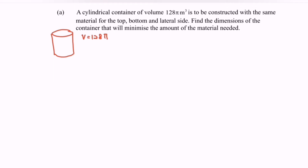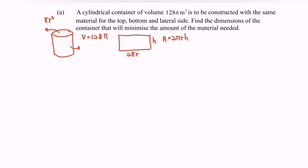The area for the top is πr². The area for the lateral side — the rectangle — uses the circumference of the cylindrical container, which is 2πr, multiplied by the height h. So the area for the rectangle is A = 2πrh. Kindly take note that the formula for the volume of a cylinder is πr²h.